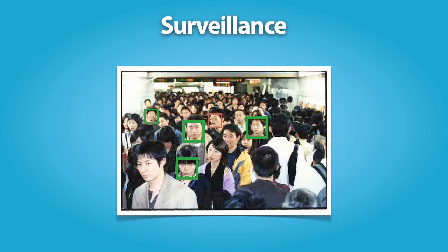Another purpose is for surveillance. With biometrics, large crowds may be screened for fugitives, missing children, or to identify terrorists. Facial recognition software in particular is increasingly being used to monitor crowds at large sporting events, such as the Super Bowl. Since 9-11, biometrics have been used extensively at airports and border entry points.